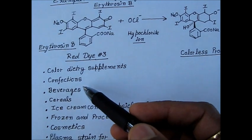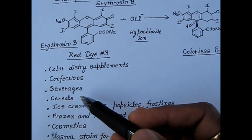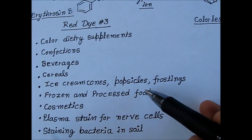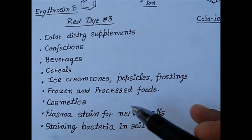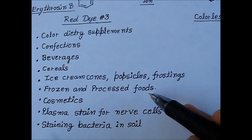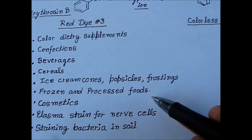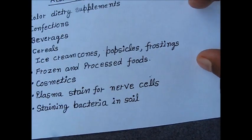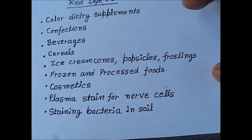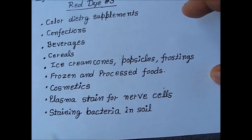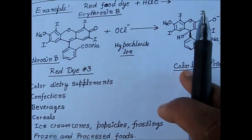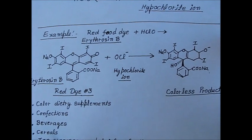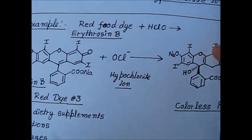This dye is very commonly used as a food color in confectionaries, beverages, cereals, ice cream cones, popsicles, frosting, frozen and processed foods, and in meat coloring. It is also used in cosmetics and as a plasma stain for nerve cells and staining of bacteria in soil.